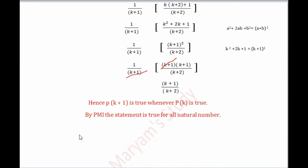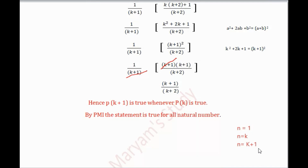This gives (k+1)/(k+2), which is exactly what we wanted on the right hand side. Hence P(k+1) is true whenever P(k) is true. By the Principle of Mathematical Induction, the statement is true for all natural numbers. We have verified the given statement for n=1, k, and k+1, and can conclude that it holds for all natural numbers.